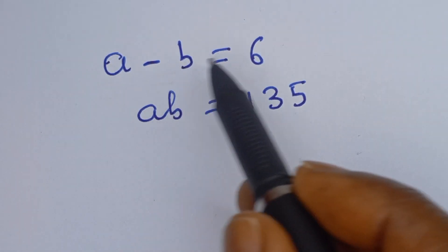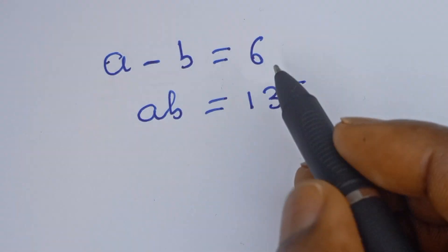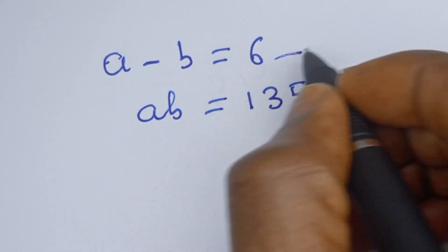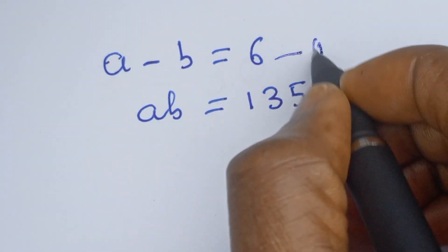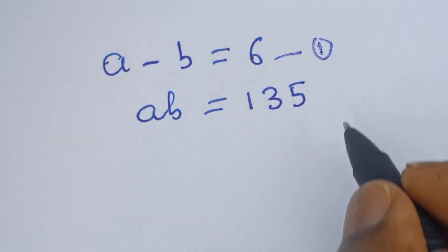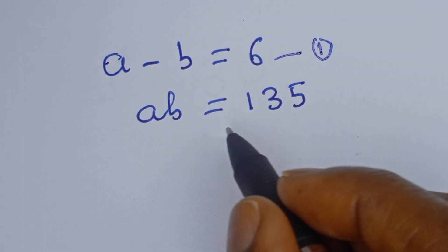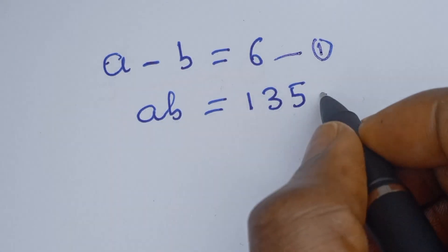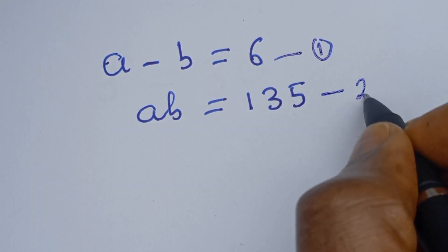A minus B is equal to 6 — let's call this equation 1. AB is equal to 135 — let's call this equation 2.